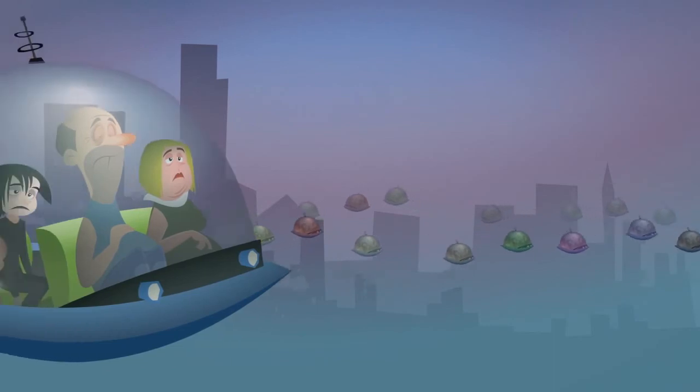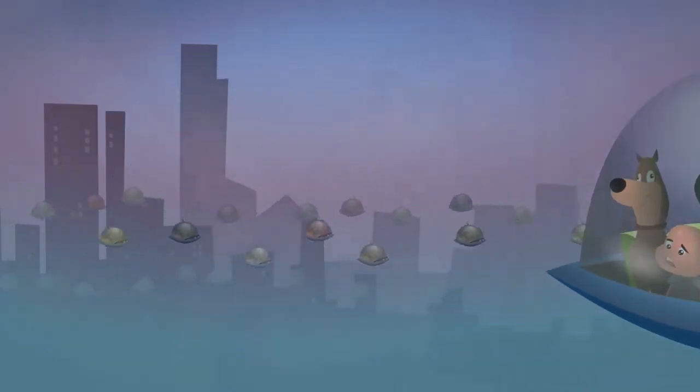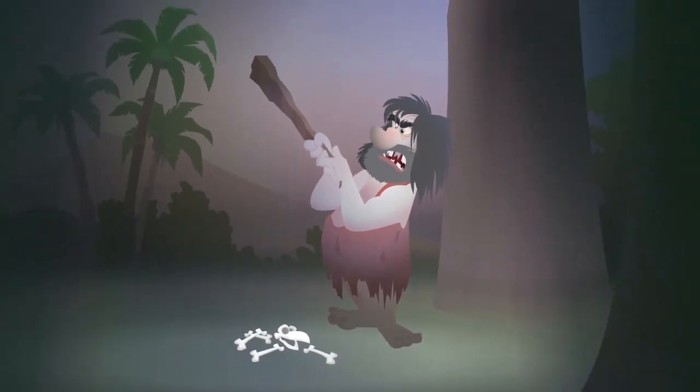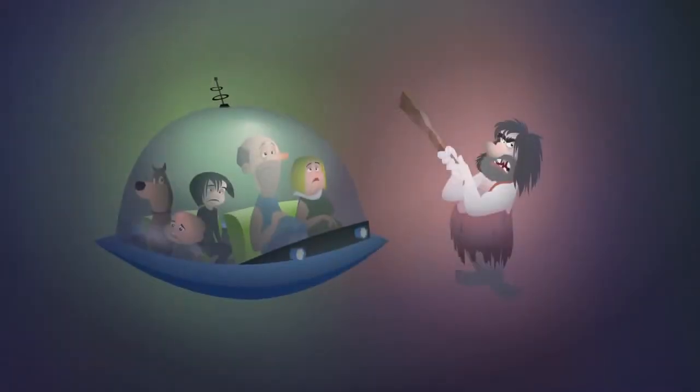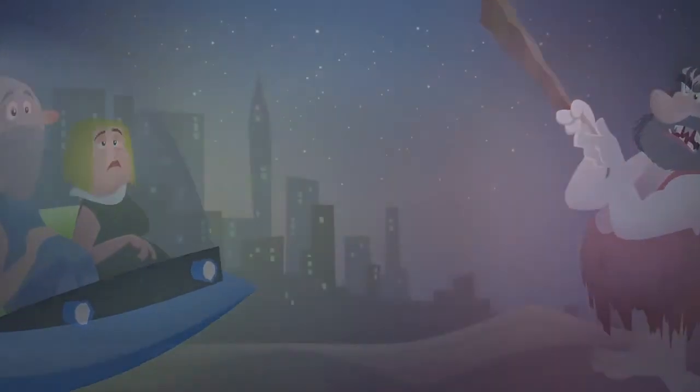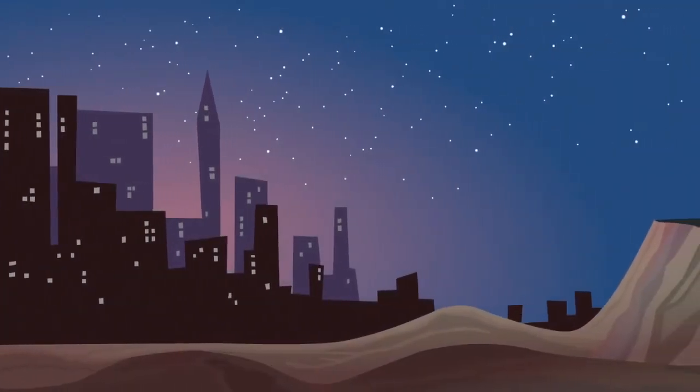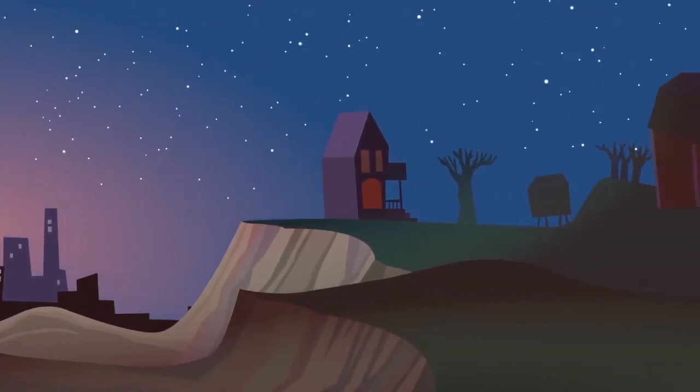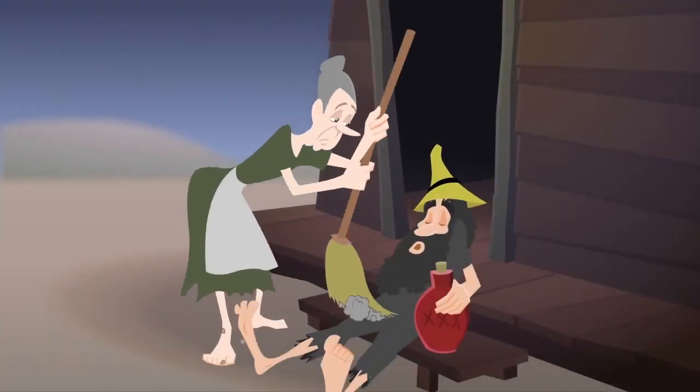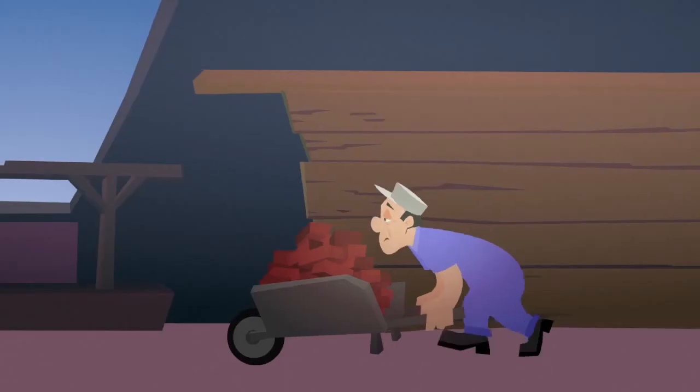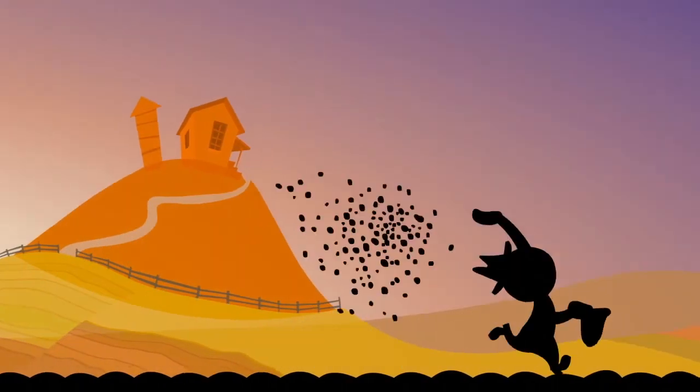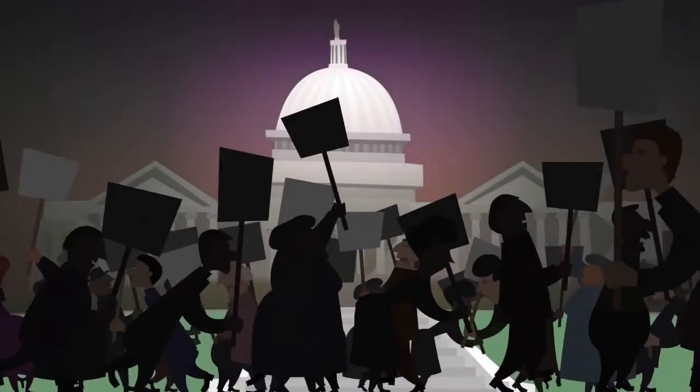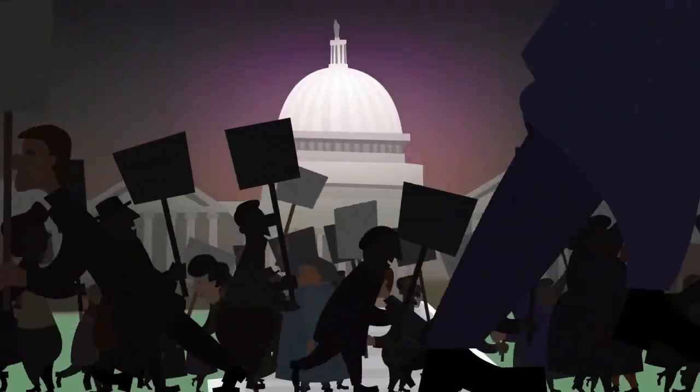Optimists believe that growth will continue forever, without limits. Pessimists think that we are heading towards a new stone age or extinction. The truth may lie between these extremes. It is possible that society might fall back to a simpler state, one in which energy use is a lot less. This would mean a harder life for most: more manual labor, more farm work, and local production of goods, food, and services. What should a person do to prepare for such a possible future?